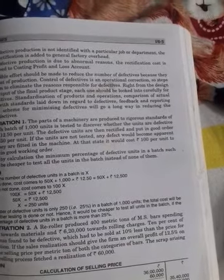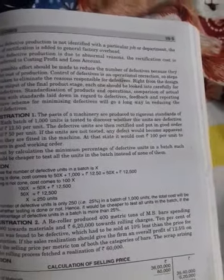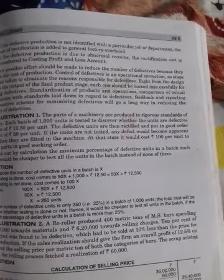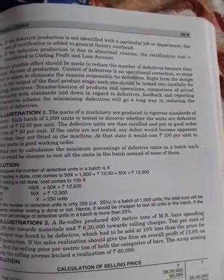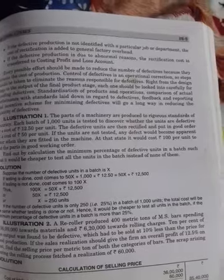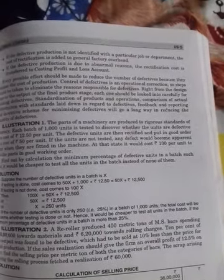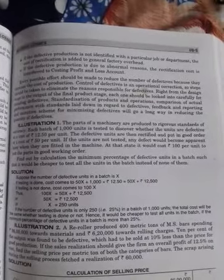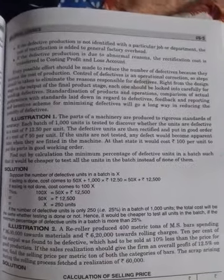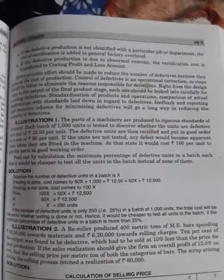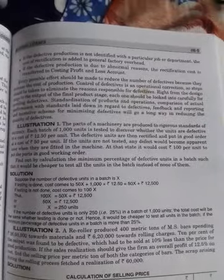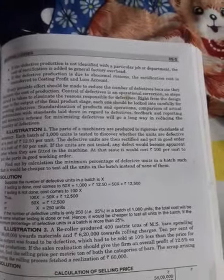The percentage calculation shows 25%. We multiply units by the rate and cost. The minimum percentage of defective units from 1000 units is 25%. Next illustration, the second one, you try.